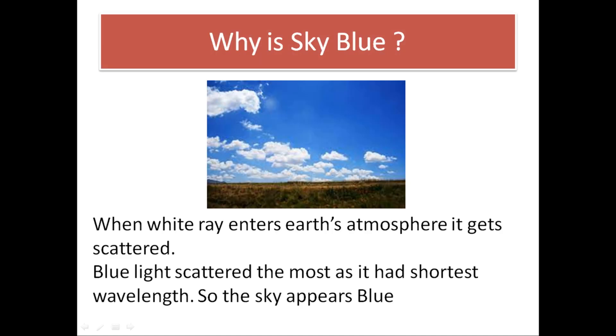Our next question is why is the sky blue? The answer is when white light enters the earth's atmosphere, it gets scattered. Blue light scatters the most as it has the shortest wavelength, so the sky appears blue.